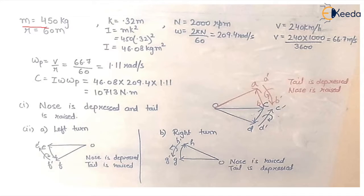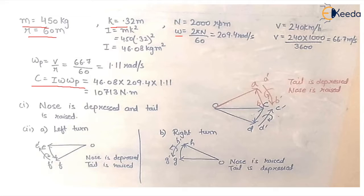From the question we have: mass = 450 kg, radius = 60 m, radius of gyration k = 0.32 m. The formula for gyroscopic couple is C = I·ω·ω_p, where I is the moment of inertia given by mk². The angular velocity ω is found using ω = 2πn/60, where n is given. The linear velocity is 240 km/h, which we must convert to meters per second to maintain a single system of units.